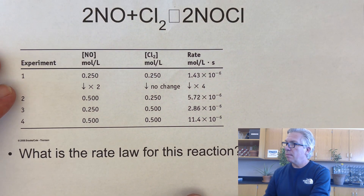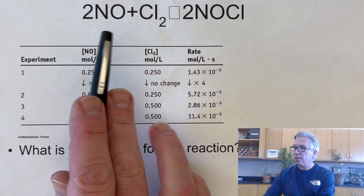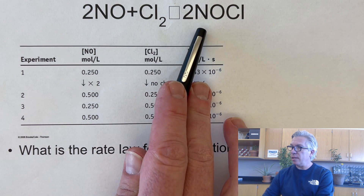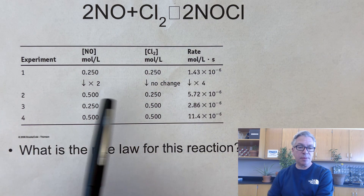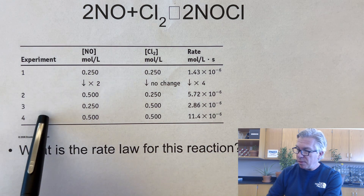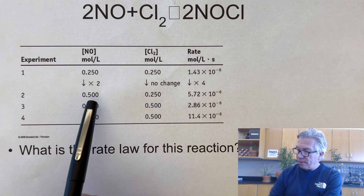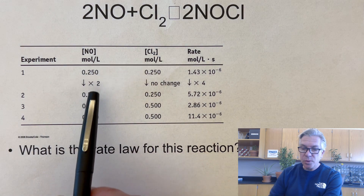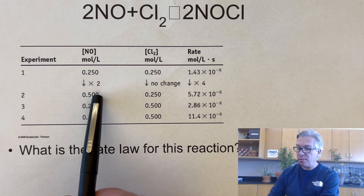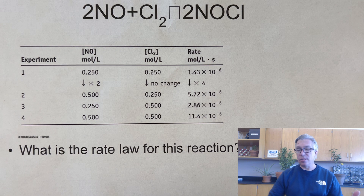Let's look at another example: the reaction 2NO plus Cl2 making 2NOCl. We have some experimental data. In experiment one versus two, NO went from 0.25 to 0.5 — doubled — with no change in Cl2, and the rate went up by a factor of 4, which is the square of two. That indicates it's a second-order reaction with respect to NO.